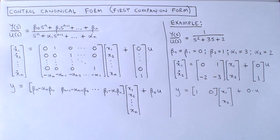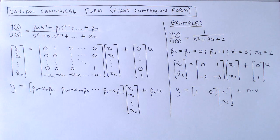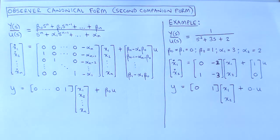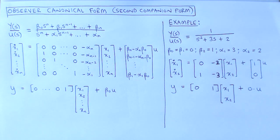The control canonical form is a useful form when we want to do pole placement design later in this module, making the design procedure very easy. The second standard form we look at is the observer canonical form, also called the second companion form.